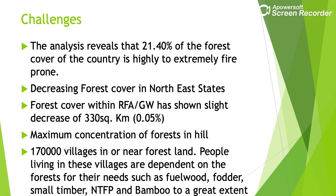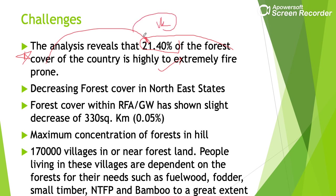That was the data from a Prelims perspective. Now for the challenges highlighted by the report: first, 21.40% of India's forest cover is fire-prone, which is very significant. Recent examples include forest fires in Uttarakhand. Another concern is that North Eastern states, despite having the highest percentage of forest cover, have shown a decrease in recorded forest cover — a slight decrease of 330 square kilometers.